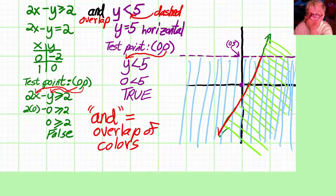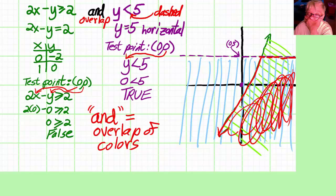So here is your answer. You have a solid boundary on the left, a dashed boundary above, and the area of overlap is the area I'm coloring in red.